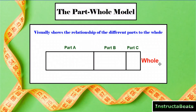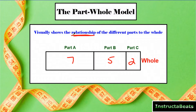The part-whole model visually shows the relationship of the different parts to the whole. Just like in our introduction of tape diagrams — let's say we're talking about apples — part A could be red apples, part B could be green apples, and part C could be yellow apples. Looking at this, we're clearly showing that seven is bigger than five.